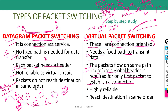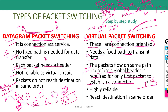In datagram packet switching, packets do not reach the destination in the same order. For example, data was divided as P1, P2, P3, P4. Each packet independently chooses its own node and travels via different paths. If P2 chose a shorter path than P1, and P1 experienced some delay, then P2 will be received first, then P1. In virtual packet switching, packets arrive at the destination in the same order — first P1, then P2, then P3, then P4.